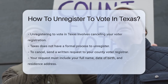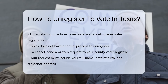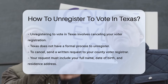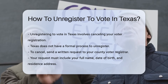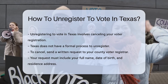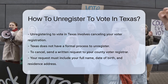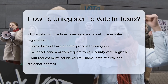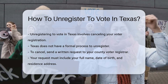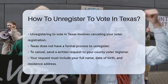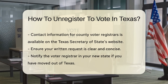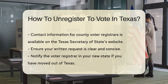Unregistering to vote in Texas is a straightforward process. First, you need to know that Texas does not have a formal process to unregister. Instead, you can request your voter registration to be canceled. To cancel your voter registration, you must send a written request to the voter registrar in your county. This request must include your full name, date of birth, and residence address.